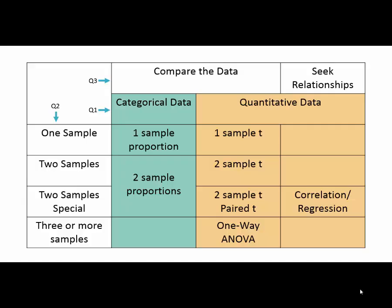So here we have our list divided by the three questions. When designing a study, ask yourself: Question 1 — will I be collecting categorical or quantitative data? (Remember, if you're counting how many subjects have a particular trait, that's categorical.) Question 2 — am I collecting from one sample, two samples, three or more samples, or do I have two sets of data from one group of people? Question 3 — am I trying to compare data from each group or to a historic value, or am I looking for a relationship between two sets of data? Answer those three questions, and you'll know which test to use.